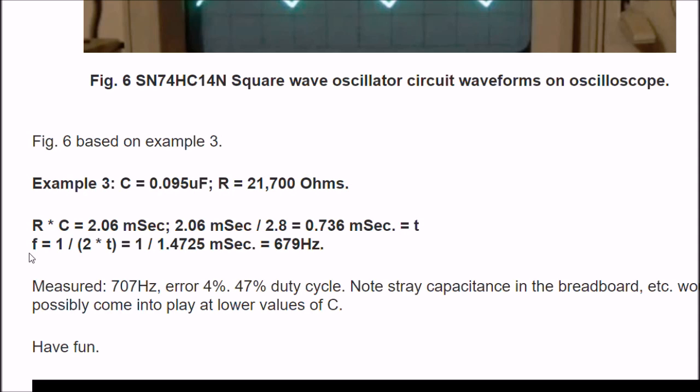Let's calculate our frequency. I'm going to have to have 2 times T and take the reciprocal. Well, 2 times T is 1.4725 milliseconds. Take the reciprocal of that. That is 679 hertz. When I measured the output, I found 707 hertz with an error of 4% and a 47% duty cycle.